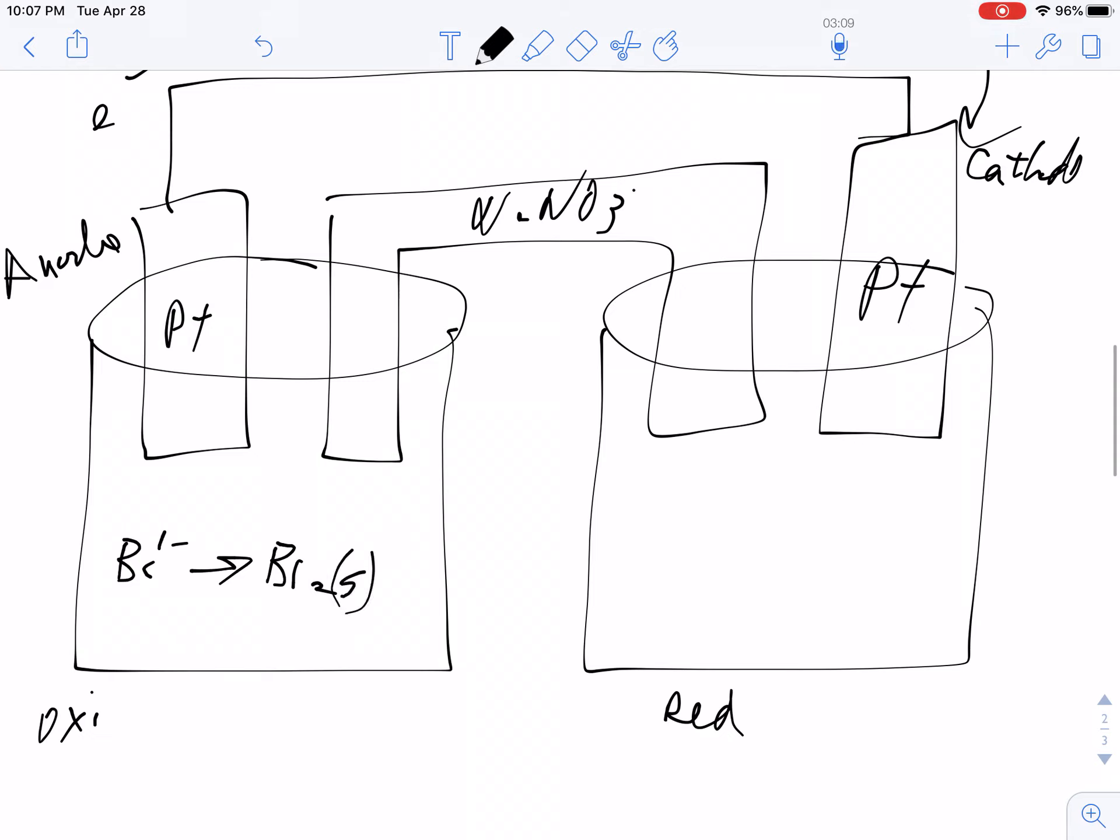So bromine gas is going to form at the anode. On this side, the chlorine. So my electrons go up into there. And then that means my electrons are leaving.